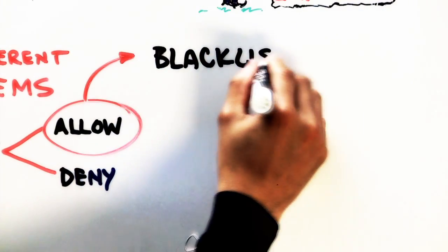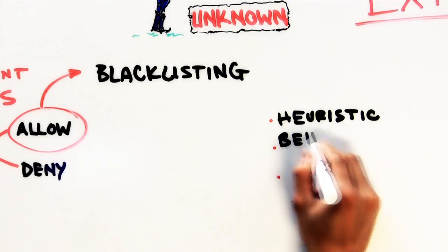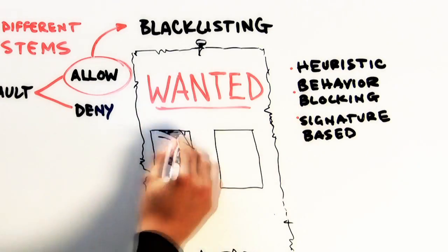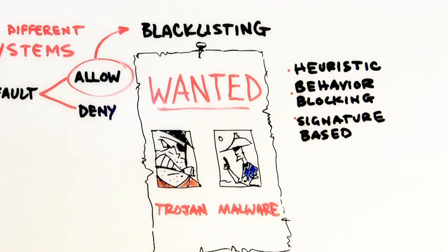Default allow system works on blacklisting and these things could use heuristics, behavior blockers, signature-based detection, and this is how legacy antivirus products work.